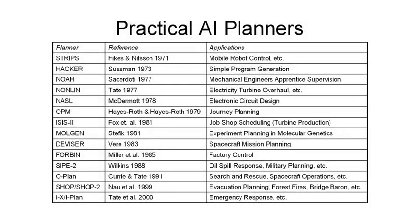Even the earliest AI planners were used in realistic and practical applications. The STRIPS planner from the early 1970s was used to control the Shakey robot. And as you can see from this table, there's a range of planners over the decades which have been applied to a wide range of application areas. We're going to cover some of those in a later module of this course.